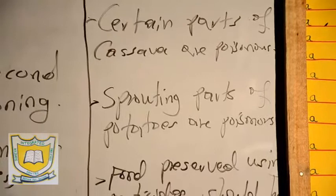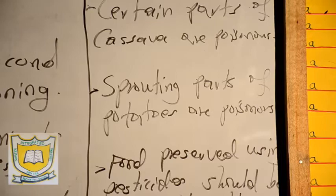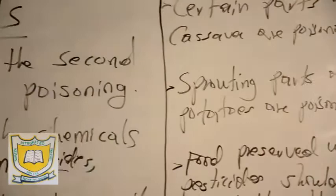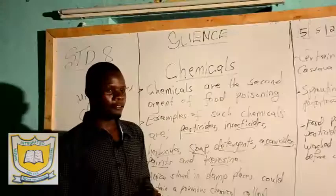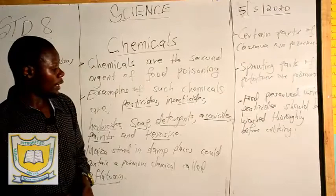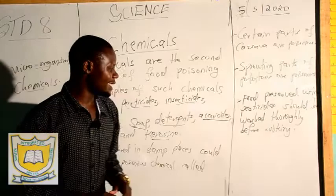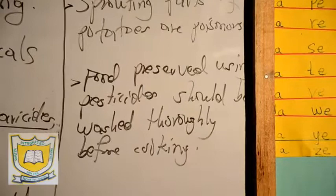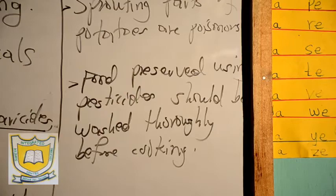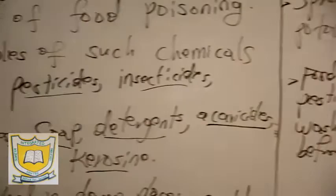We also have sprouting parts of potatoes, which are very poisonous. When you want to cook a potato, you remove all the parts which have sprouted to make sure that the potato is safe for consumption. We also have preserved foods — preserved foods which have been applied with pesticides should be thoroughly washed before they are cooked. If they are not thoroughly washed, those pesticides are poisonous and when consumed you will have stomach problems.